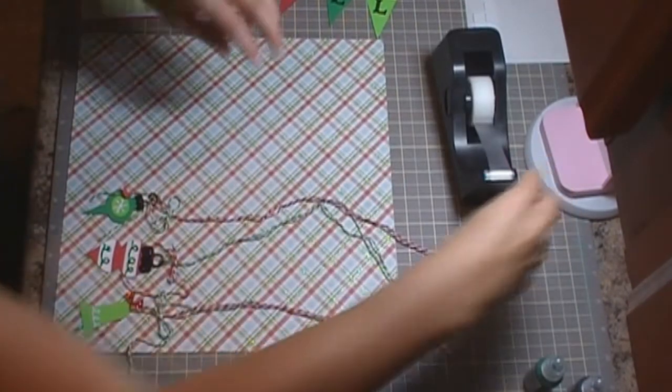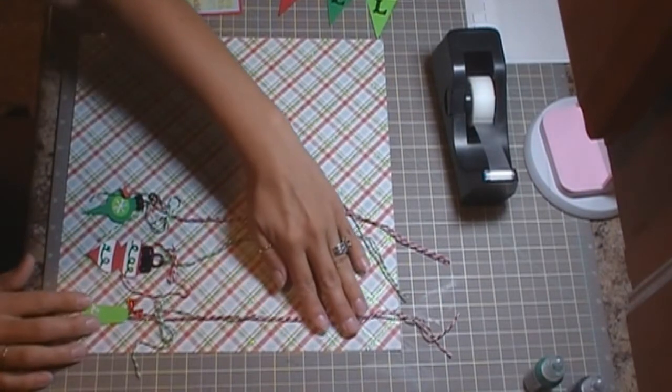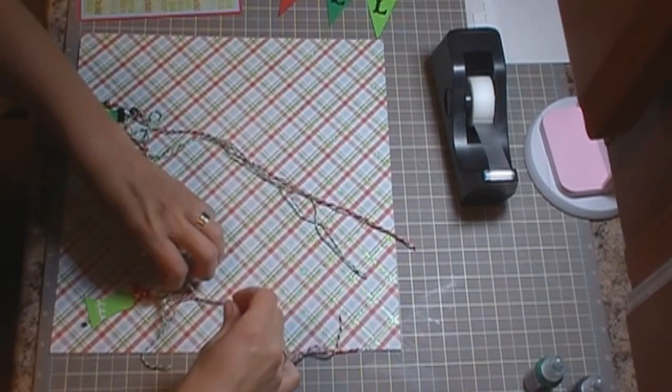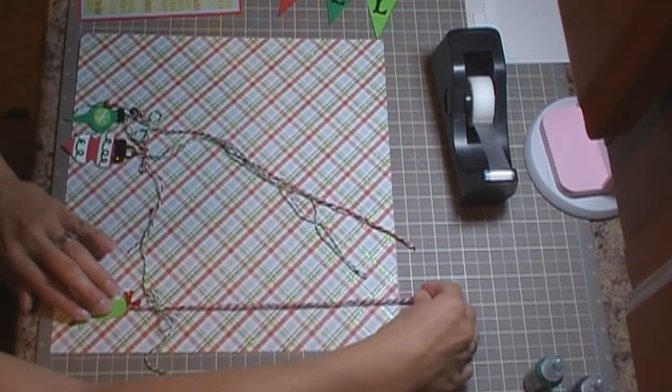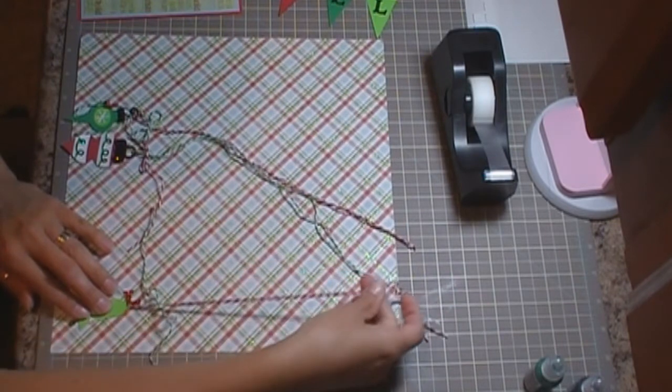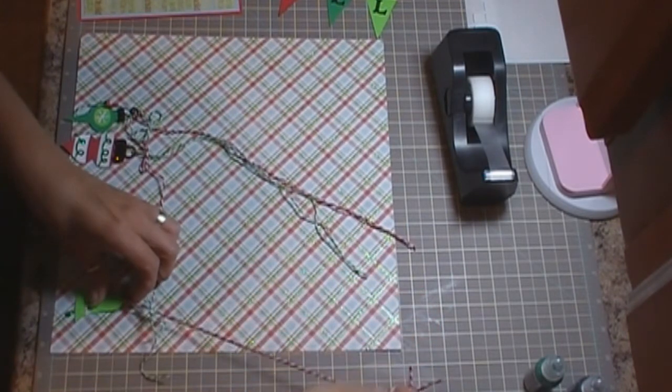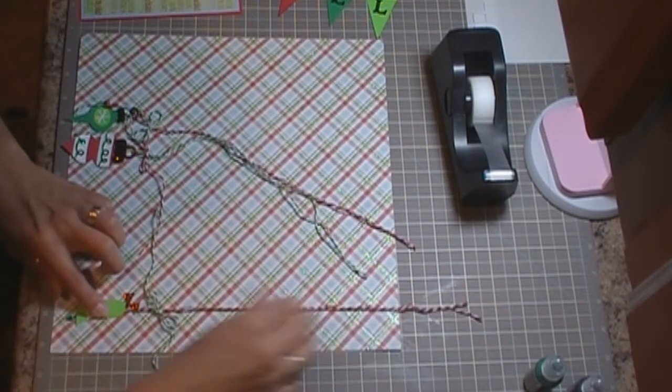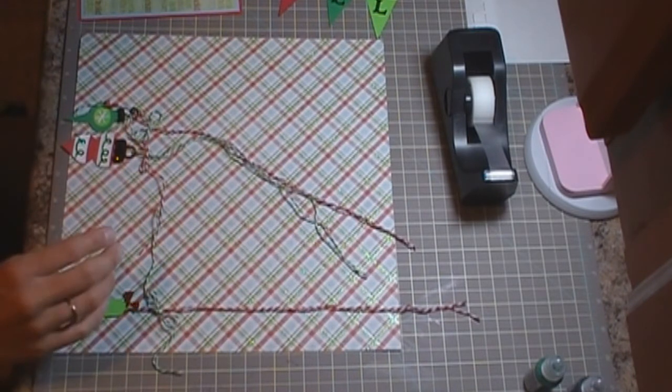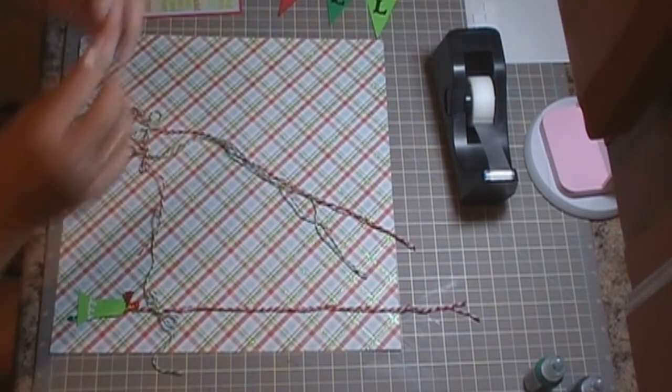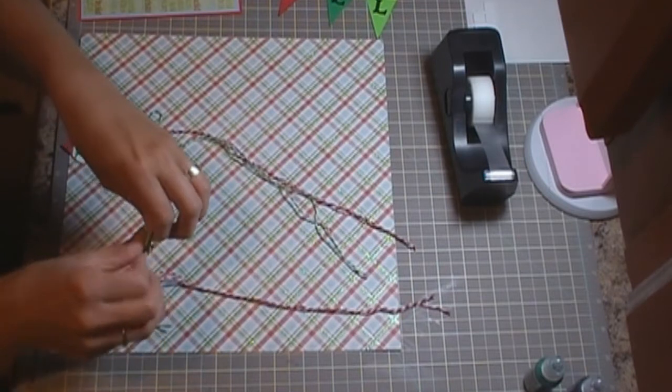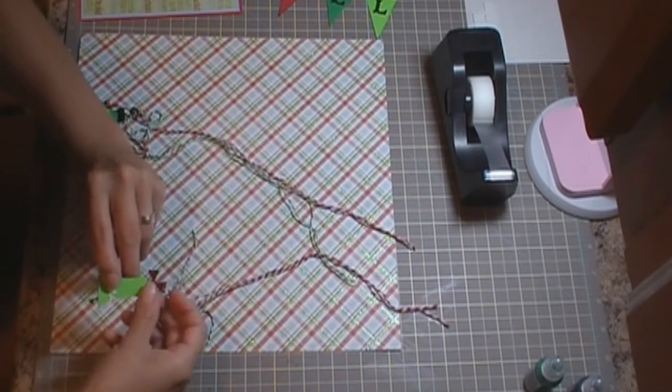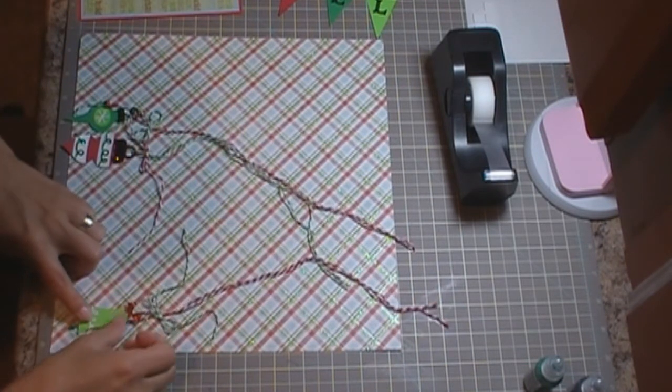So what we're going to do is we're going to kind of get these where we want them. And I took the red twine and the green twine and I made little bows and everything. But what we're going to do is we're going to get it laid out on here right about where we want it. And I have some pop dots that I'm going to use on the back of the bulb. I'm just going to use one. So we're going to adhere that right where we want it. I'm thinking right about there.